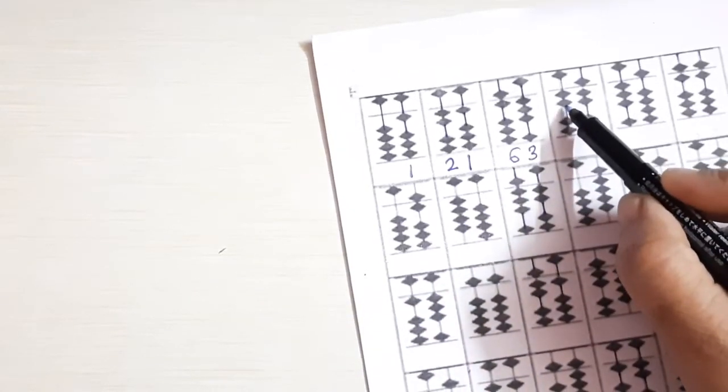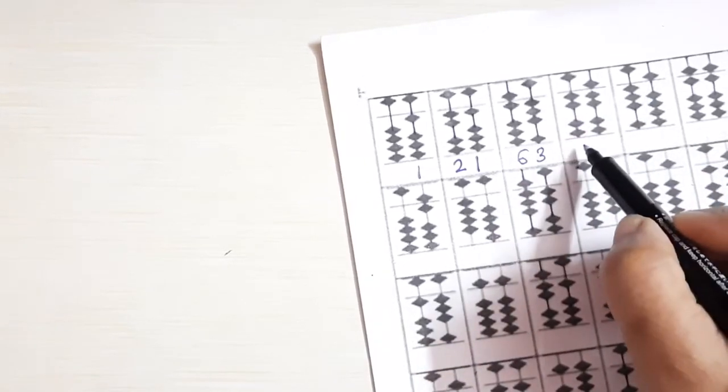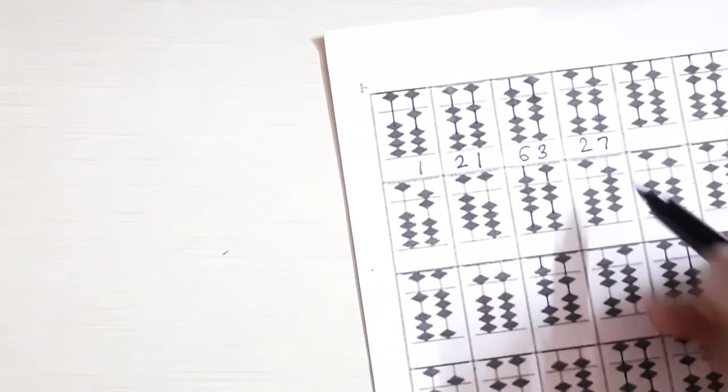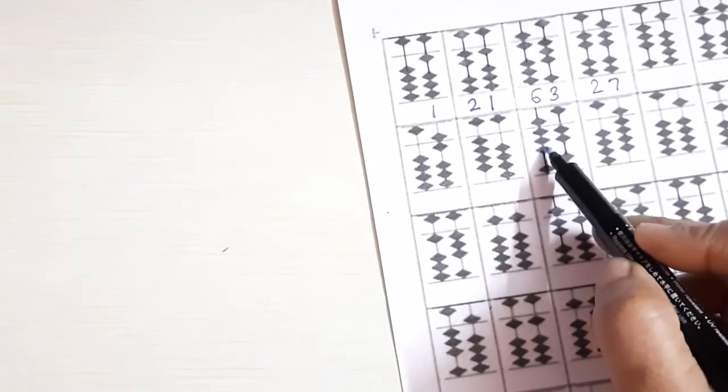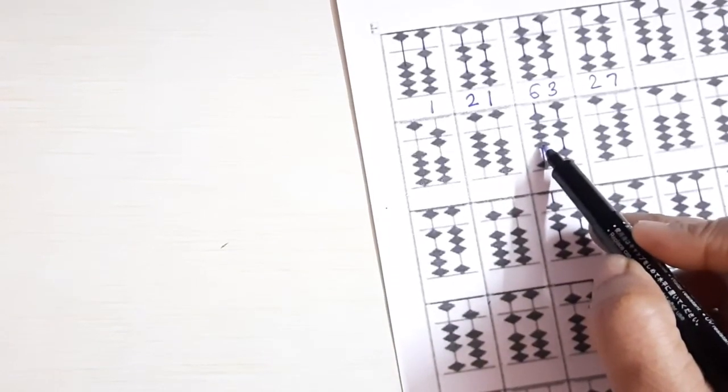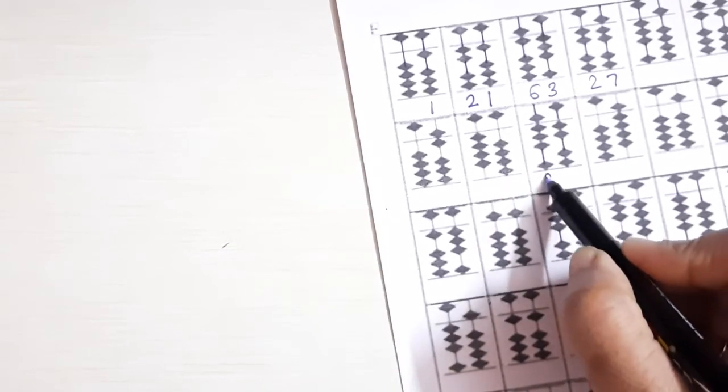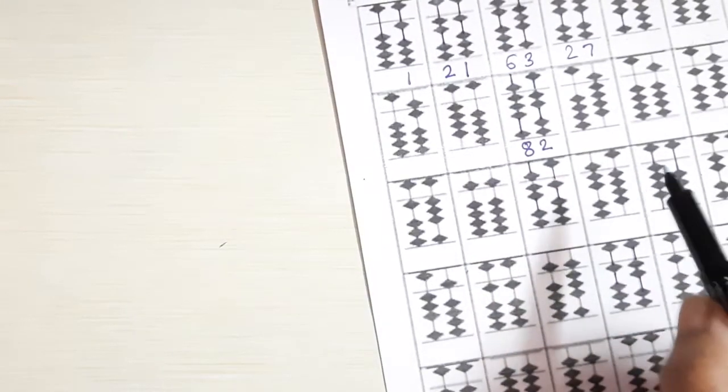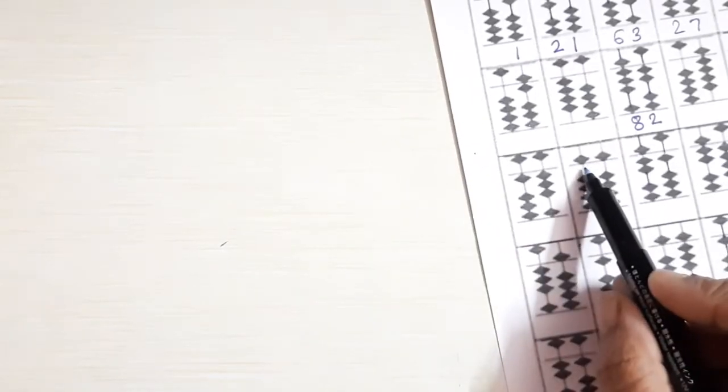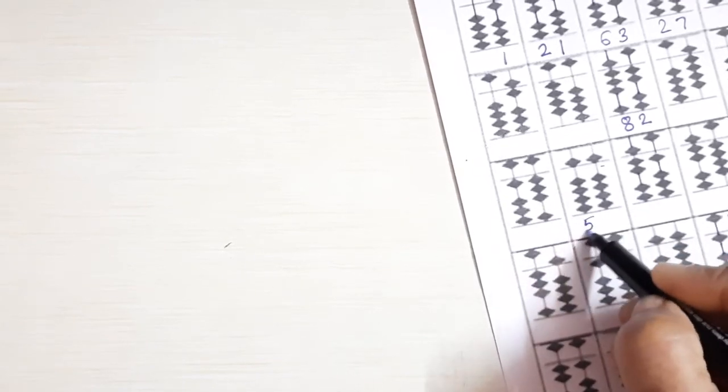Now 2, 5 and 2 makes 7, so 27. Now this one we will see, 5 and 3, 8, and 2, 82. Now this one, 5, 5, 55. Correct.